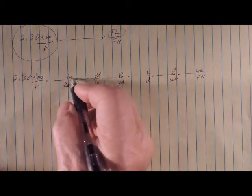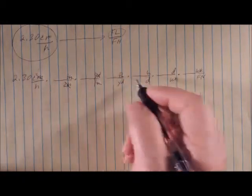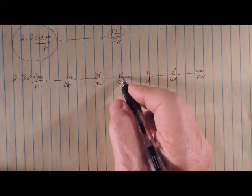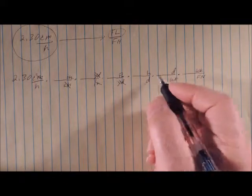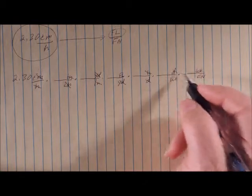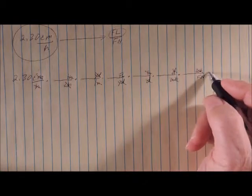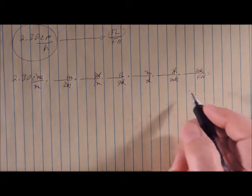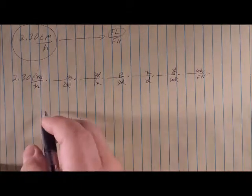Centimeters factors out, inches is going to factor out, yards is going to factor out, furlongs does not. We know that hours factors out, days factors out, weeks factors out, and fortnights does not. So I have the problem set up, other than the fact that I haven't put any numbers in here yet.